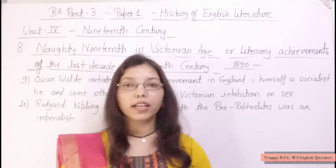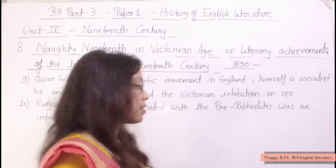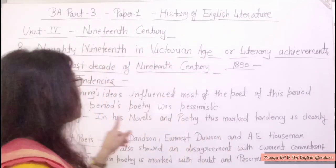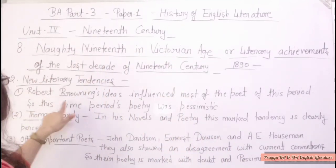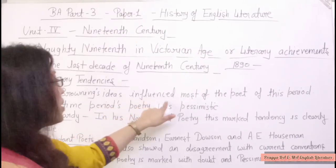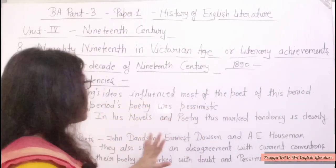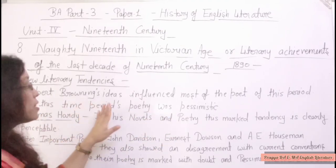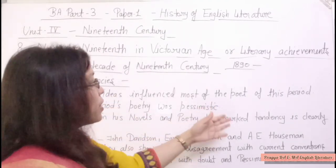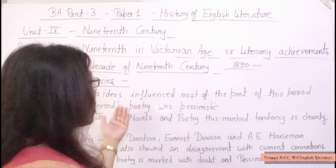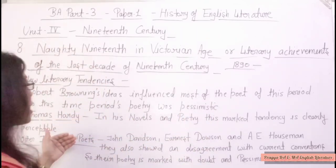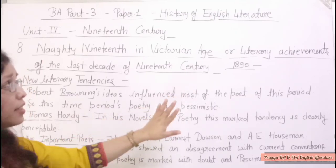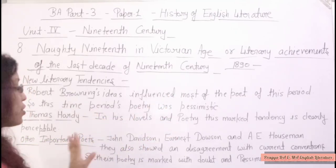Now we come to new literary tendencies. First, Robert Browning's ideas influenced most of the poets of this period. This time period's poetry was pessimistic. Robert Browning's ideas greatly influenced the poets of the 1890s, and the poetry of this time was pessimistic.